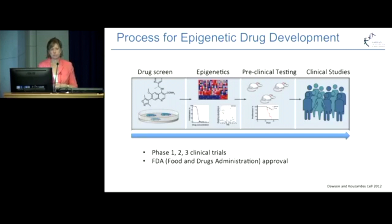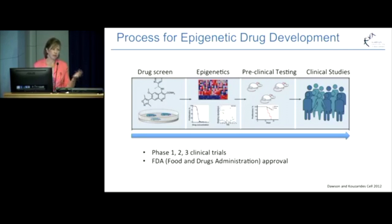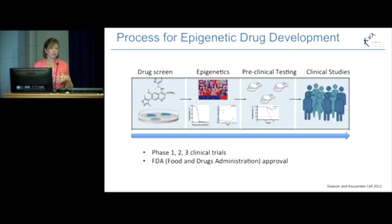What is the process for epigenetic drug development? Initially there is the identification of a molecule through a drug screen, which happens in the laboratory using cell lines. The cells are assessed for how well they're growing and how they respond to the drug, and we do epigenetic profiling to assess the effect. Drugs that show promise in inhibiting cell growth are then moved into pre-clinical testing using mouse models, where we test toxicity and validity of the approach. Molecules showing an inhibitory effect can then be moved through into clinical studies.